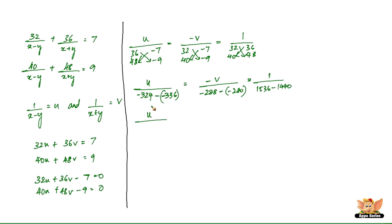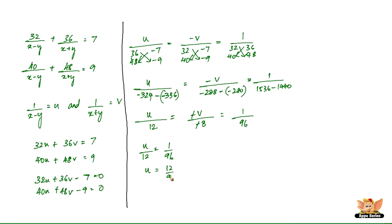So we get u divided by 12 equals negative v divided by negative 8 equals 1 divided by 96. This simplifies to u by 12 equals v by 8 equals 1 by 96. Equating u by 12 to 1 by 96 gives u equals 12 by 96, which is 1 by 8. And equating v by 8 to 1 by 96 gives v equals 8 by 96, which is 1 by 12.